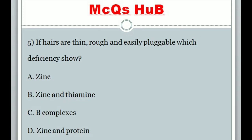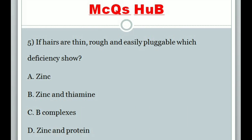Question 5: If hairs are thin, rough, and easily pluggable, which deficiency does this show? Answer D: Zinc and protein.